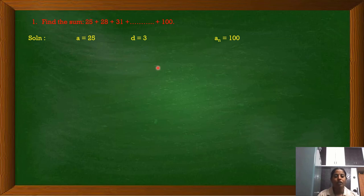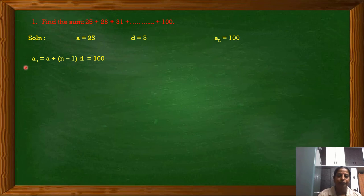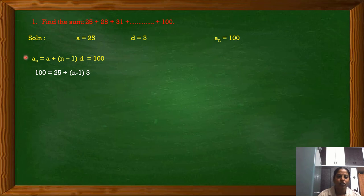To substitute the value of n in the formula we need to find the value of n. How to find the value of n? By using the formula a_n equals a plus n minus 1 into d, that is the last term formula. The value of the last term is 100, the value of a is 25, and d is 3. We don't know the value of n, so substituting all the values we have 100 equals 25 plus n minus 1 into 3.